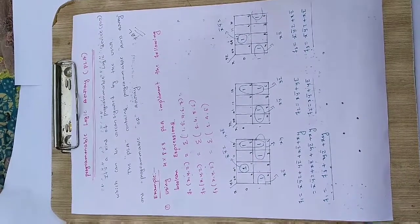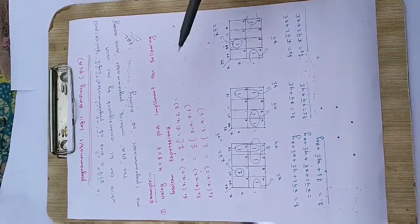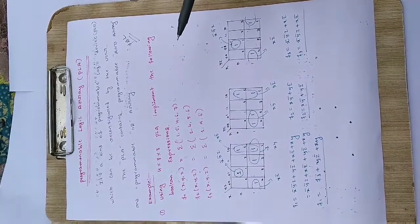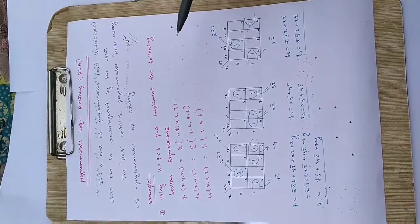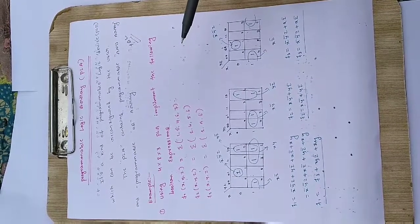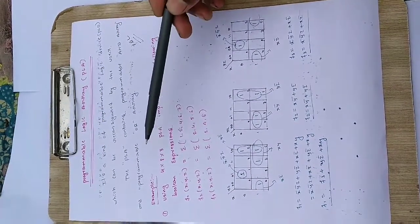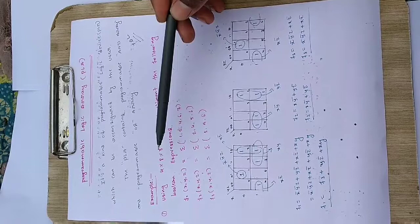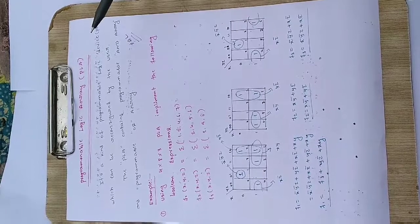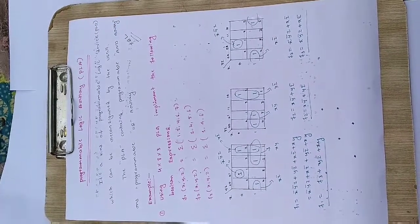Now let's move to an example to understand how we can implement the PLA. The problem says: use a 4×8×3 PLA to implement the following Boolean expressions. As I have said, PLA is mainly used to implement complex Boolean expressions. They have given 3 Boolean expressions namely F1, F2 and F3. We need to use this 4×8×3 PLA, where 4 indicates the number of inputs, 8 is the number of product terms equivalent to the number of AND gates, and 3 indicates the number of outputs.